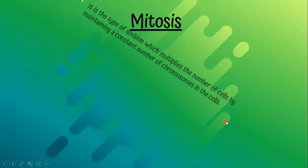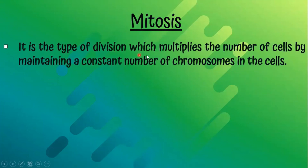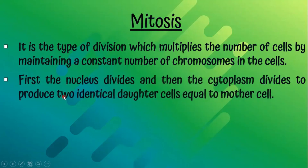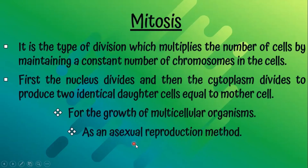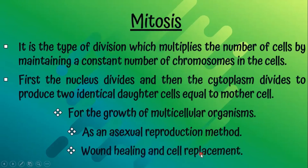Mitosis. It is the type of division which multiplies the number of cells while maintaining a constant number of chromosomes. First the nucleus divides, then the cytoplasm divides to produce two identical daughter cells equal to the mother cell. The uses of mitosis are: growth of multicellular organisms, asexual reproduction, wound healing, and cell replacement.